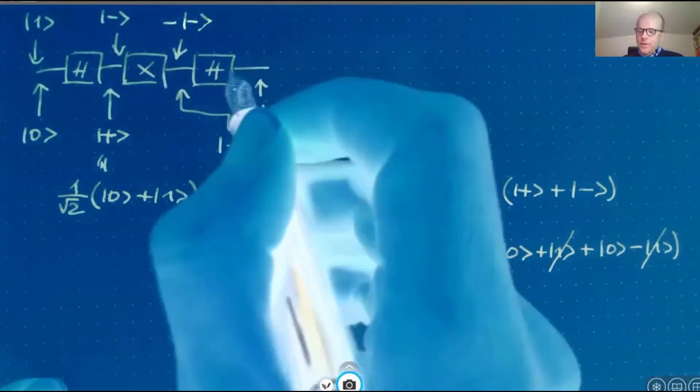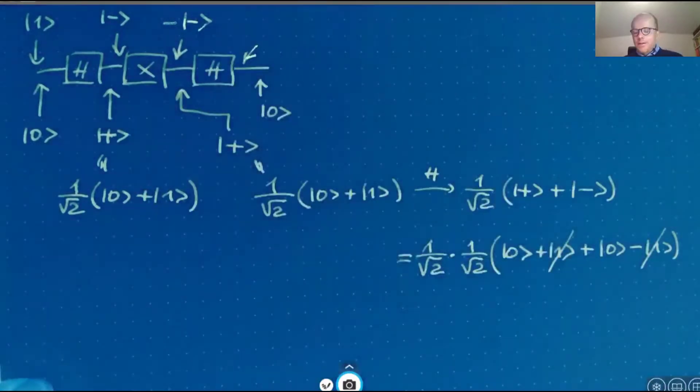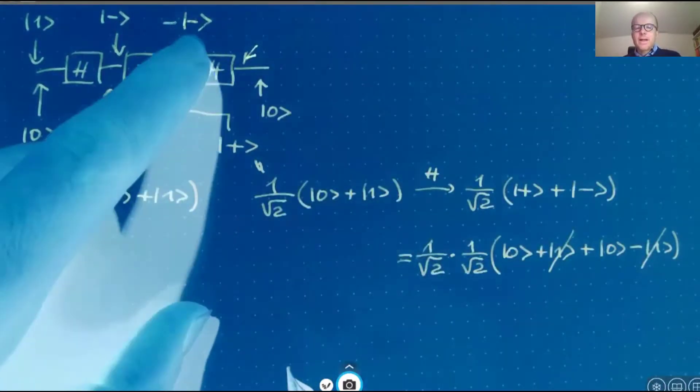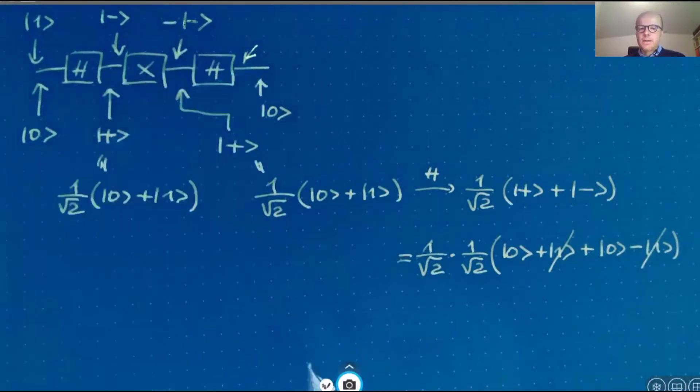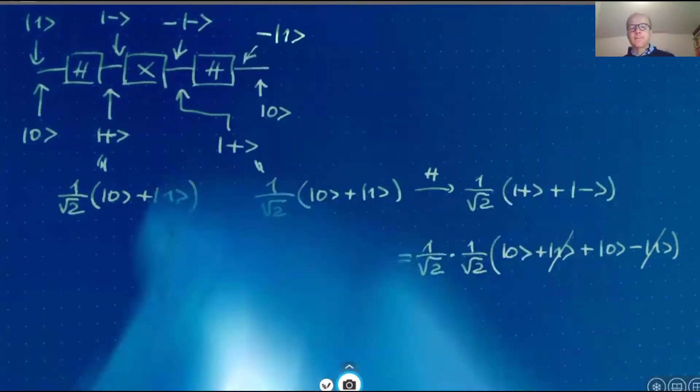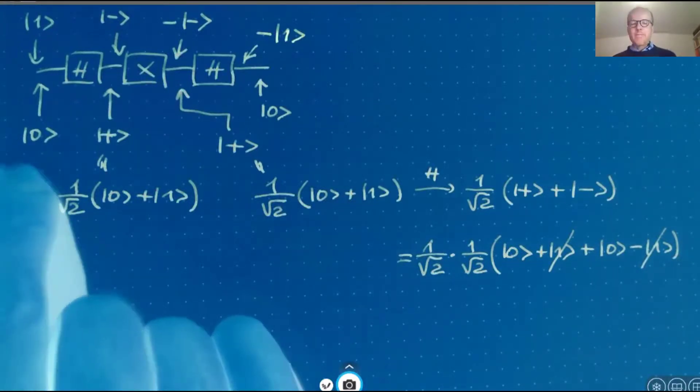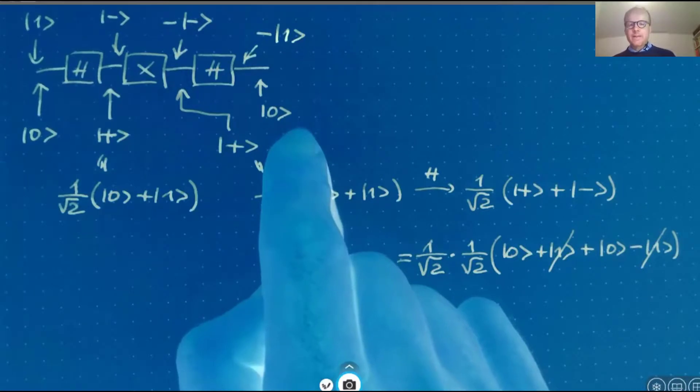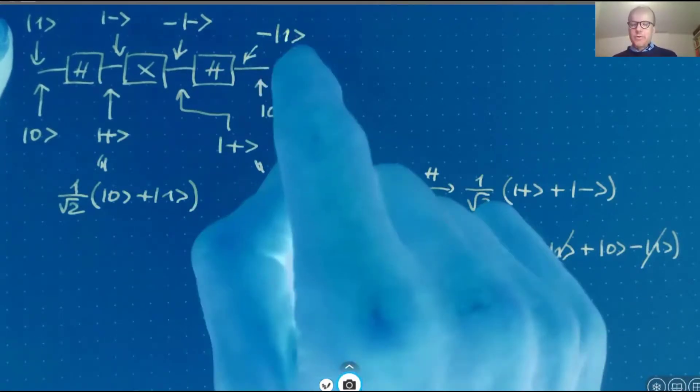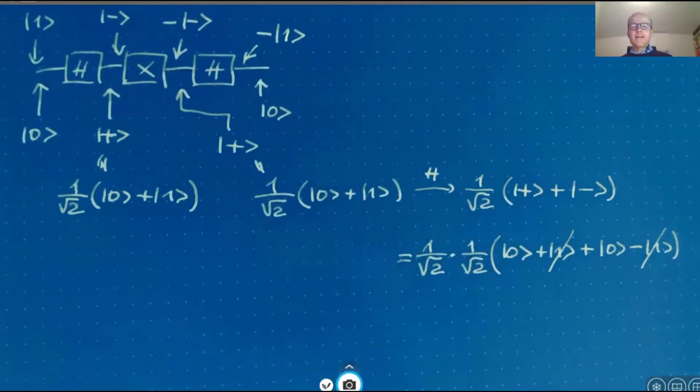And then we have the final Hadamard gate. Hadamard transforms the minus state back to basis state one. So in the end, we have minus basis state one. So in sum, basis state zero is mapped to itself. Basis state one is mapped to minus basis state one. That's exactly the action of the Pauli Z gate.